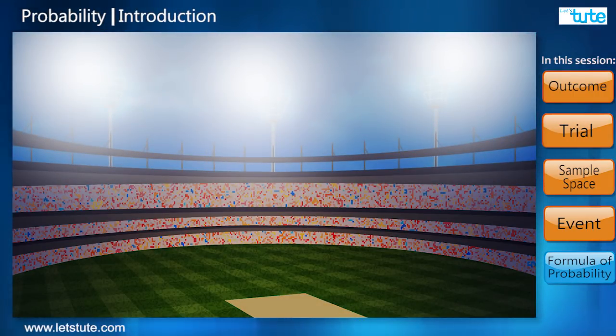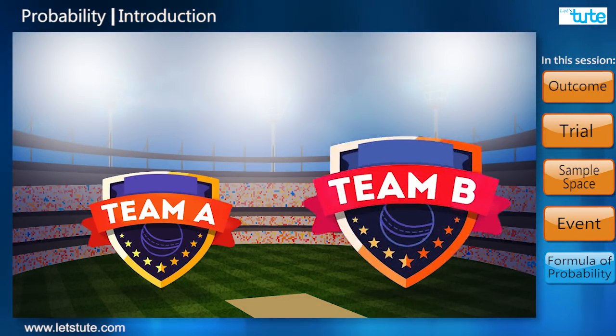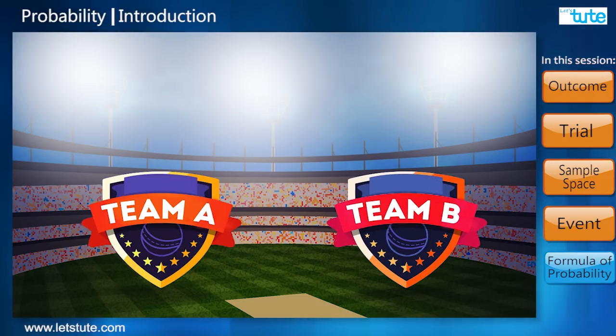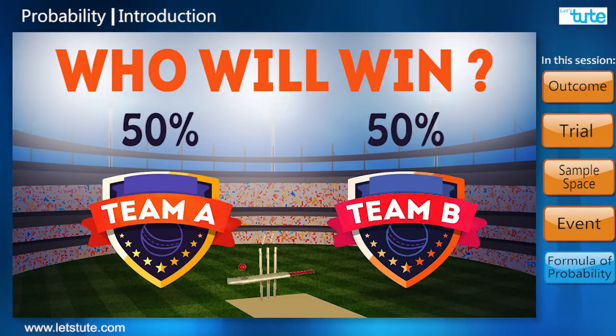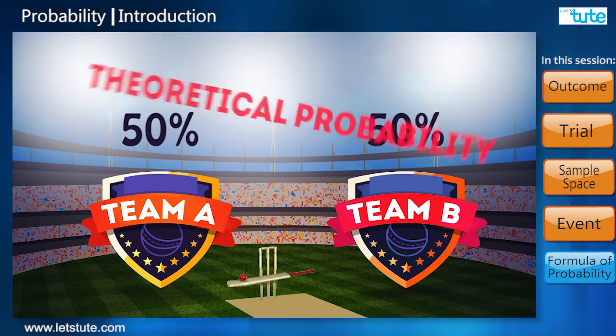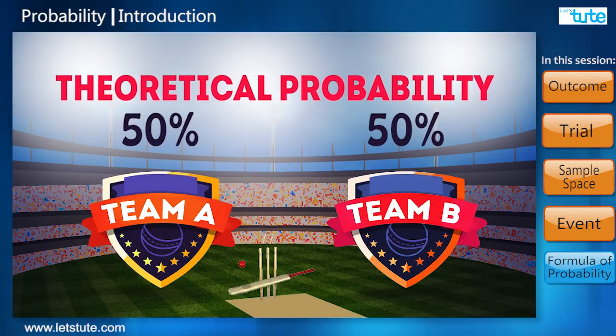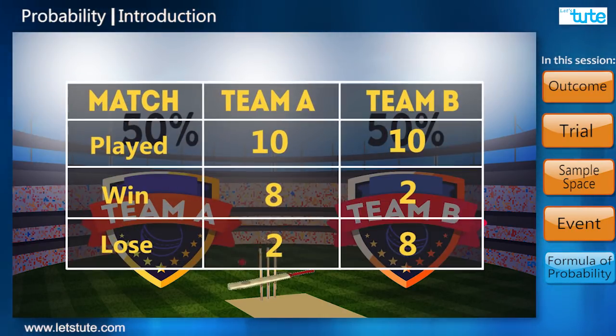Suppose team A and team B were to play a game of cricket. At the beginning of the match, if we were to predict the winners of the match when we know nothing about their earlier performances, we would say they both have 50-50 chance of winning. This is called theoretical probability.